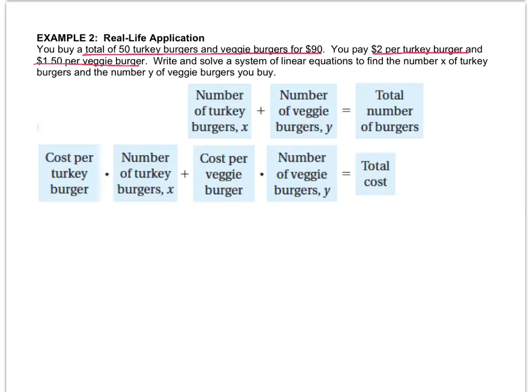So let's do it. It tells you that the number of turkey burgers is x and the number of veggie burgers is y. And that equals the total number of burgers. So this equation is going to be x plus y, because I don't know either of those values, equals the total is 50.